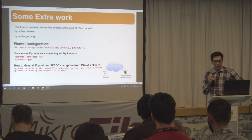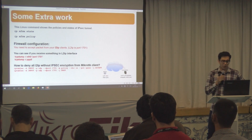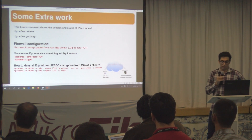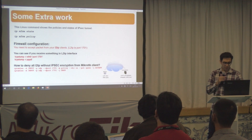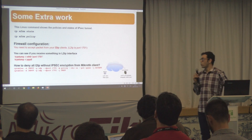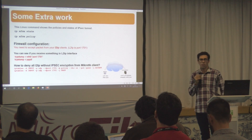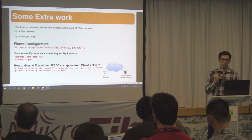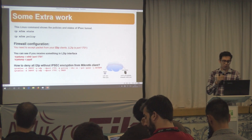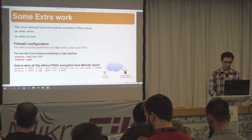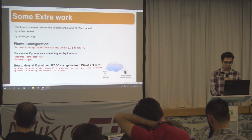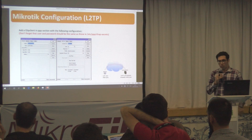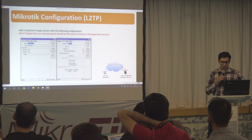Some extra work is to configure the firewall. You should allow port 1701 for L2TP. These are the other commands if you want to deny all packets received on the Unix server that have no encryption — if you want to reject them, you can use the commands shown in red at the bottom.